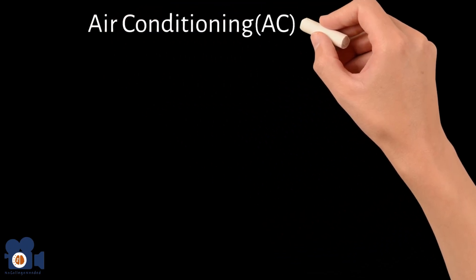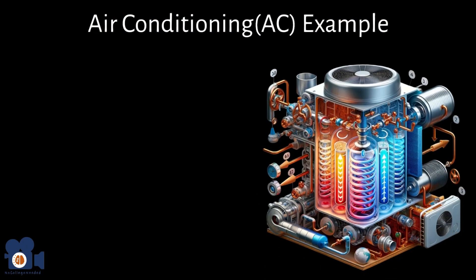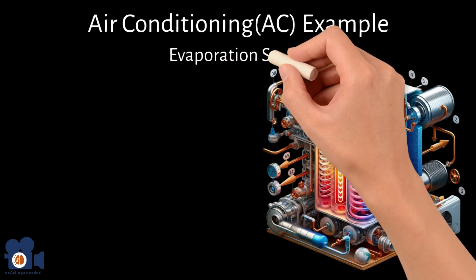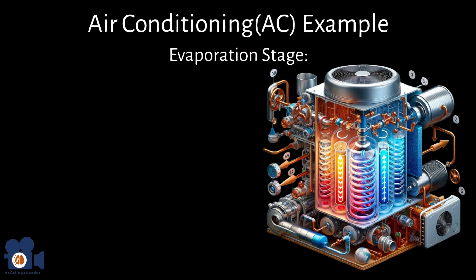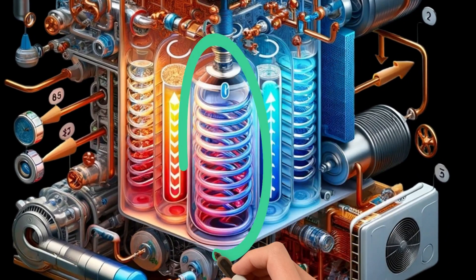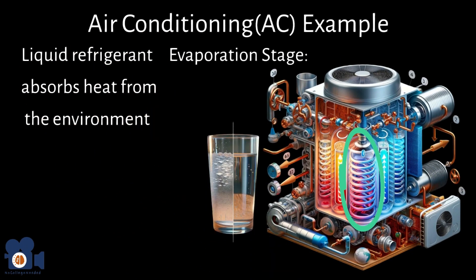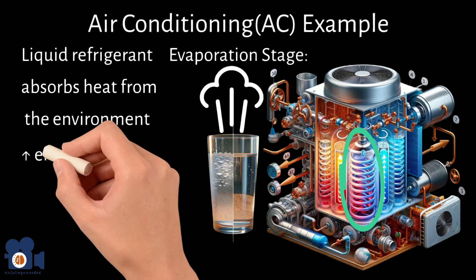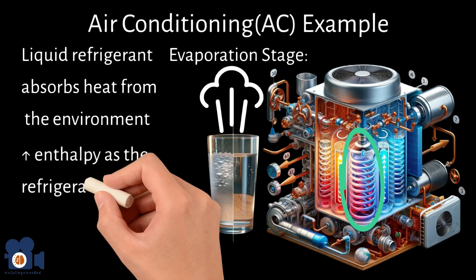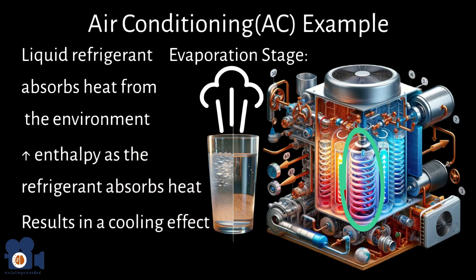Now that we know a bit more about enthalpy, let's go over the air conditioning example. As stated previously, AC works on vapor compression cycles, which use a refrigerant that undergoes phase changes that facilitates the transfer of heat. The key stage of the cycle where enthalpy plays a cooling role is in the evaporation stage, similar to sweating. Inside the evaporator coil, the liquid refrigerant absorbs heat from the environment like water in a glass that gets warmer and evaporates, turning from a liquid to a vapor. This process involves a significant increase in enthalpy as the refrigerant absorbs heat, resulting in a cooling effect on the surrounding area.